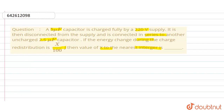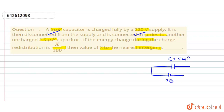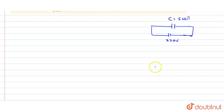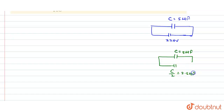In this question, a capacitor of 5μF is charged fully by a 220V supply. We draw the circuit with capacitance C = 5μF connected to V = 220V. It is then disconnected and connected in series with another uncharged capacitor of 2.5μF, which is C/2, i.e., half the value of the first capacitor.